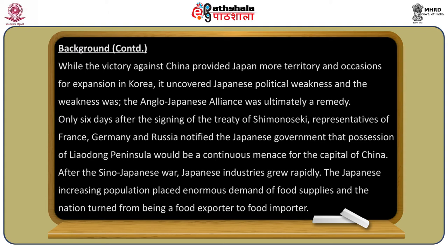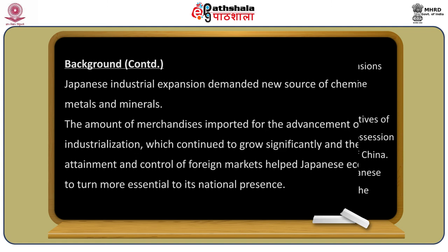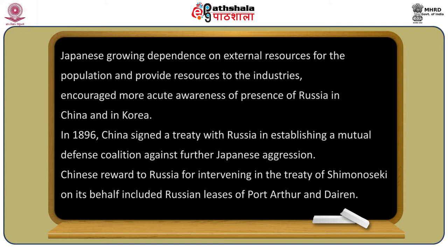After the Sino-Japanese War, Japanese industries grew rapidly. Japan's increasing population placed enormous demand on food supplies, and the nation turned from being a food exporter to a food importer. Japanese industrial expansion demanded new sources of chemicals, metals, and minerals. The amount of merchandise imported for industrialization continued to grow significantly, and attainment of foreign markets became essential to Japan's national presence. Japan's growing dependence on external resources increased awareness of Russia's presence in China and Korea.